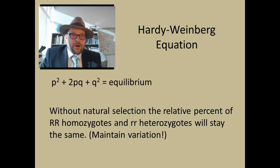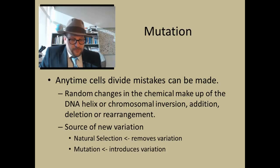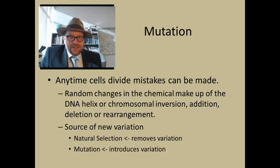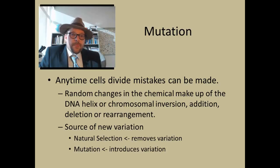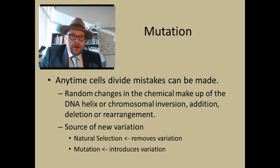Darwin's problem has been solved. Mutation is still a common way to introduce variation, because every cell is replicated millions and trillions of times, leading to the introduction of errors. Random changes in the chemical makeup of the DNA helix — or even chromosome inversion, addition, deletion, or rearrangement — are the source of new variation. So: natural selection removes variation in the population, mutations introduce new variation, and sexual mating maintains variation in the population.